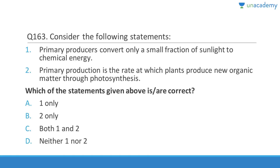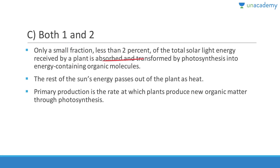Primary producers convert only a small fraction of sunlight to chemical energy — correct. Primary production is the rate at which plants produce new organic matter through photosynthesis. Only about one to ten percent conversion is possible; 99% of sunlight goes to waste. Less than 2% of total solar light energy received by a plant is absorbed and transformed by photosynthesis into energy-containing organic molecules like starch.